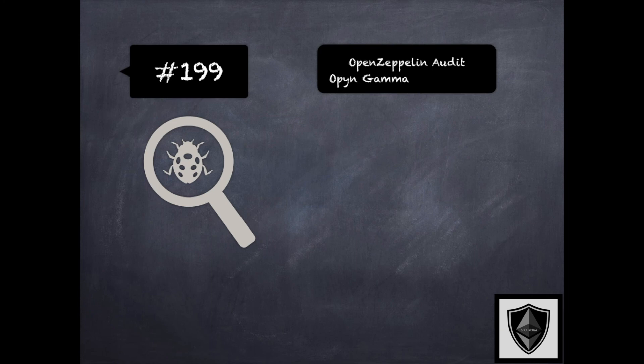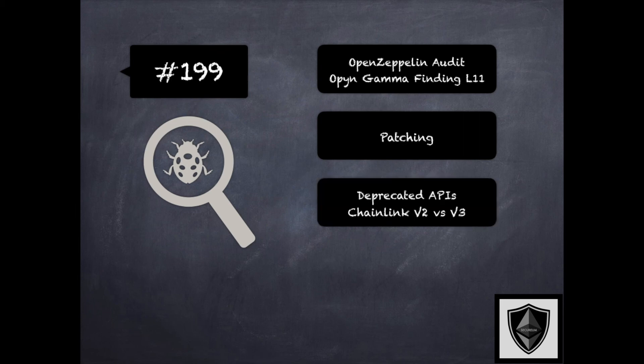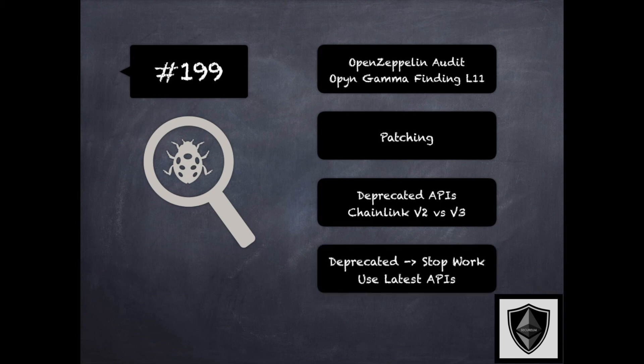Finding 199 is another finding from OpenZeppelin's audit of OpenGamma protocol, where the concern was about using a deprecated Chainlink API. The Chainlink pricer was using multiple functions from the deprecated Chainlink v2 API, such as LatestAnswer and GetTimestamp. Such functions might suddenly stop working if Chainlink stopped supporting deprecated APIs. The recommendation was to consider using the latest Chainlink v3 API. This is related to external interaction in 180 and dependency issues in 183 of security pitfalls and best practices 201.